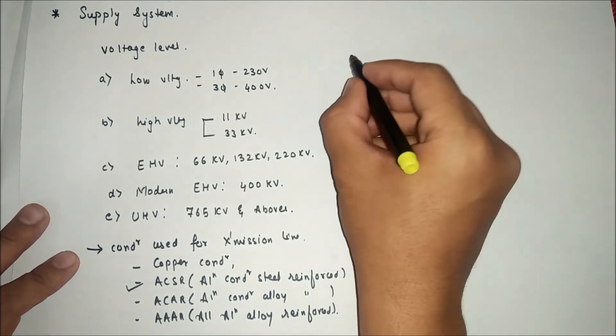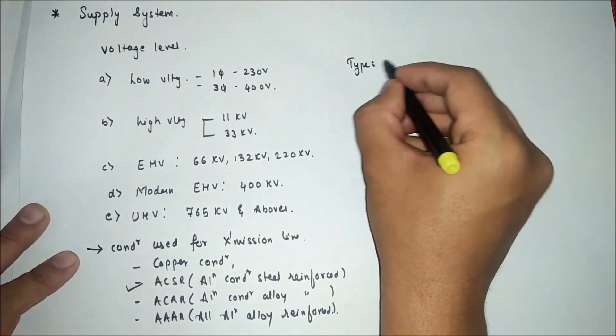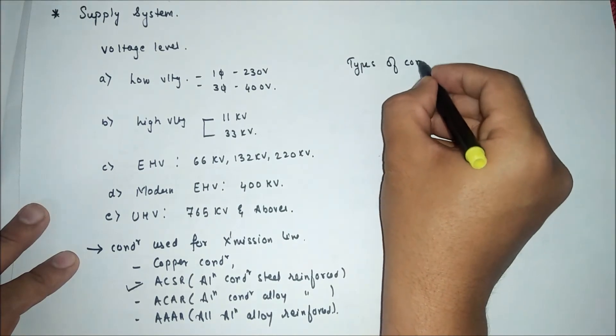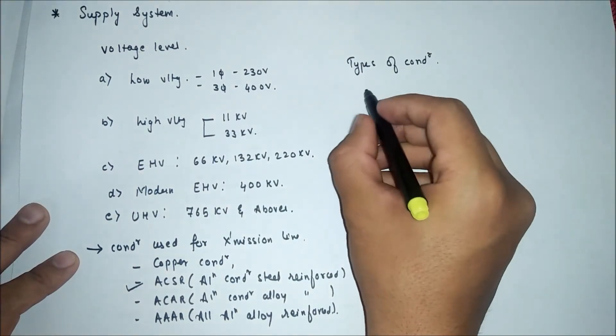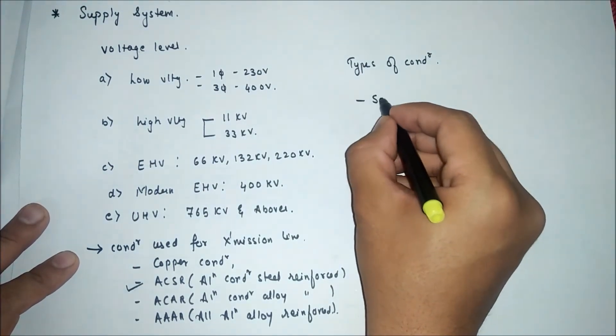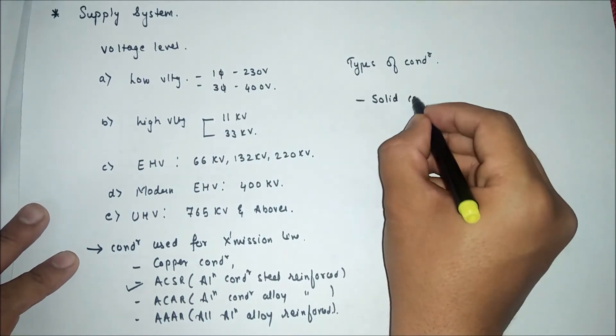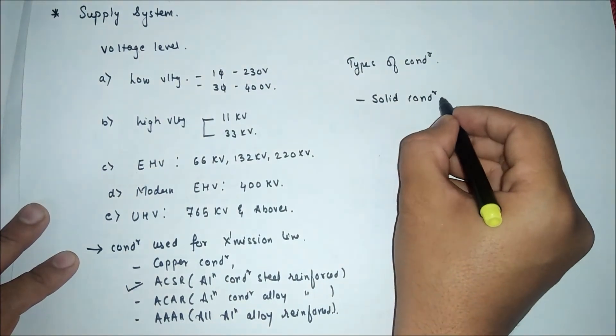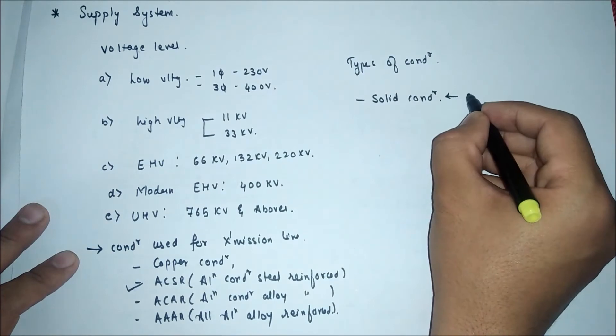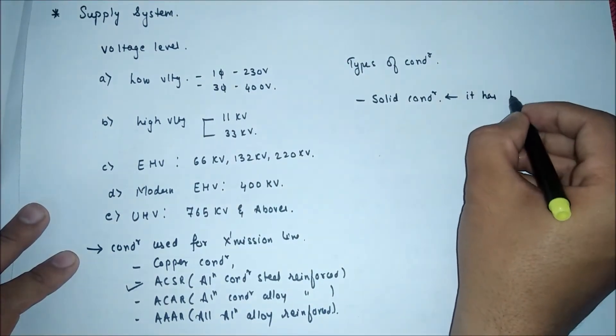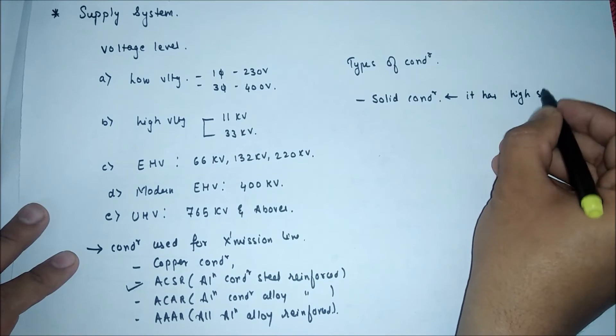We will see what are the types of conductor. First one is solid conductor which is pure. In this solid conductor it has high skin effect.